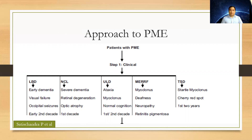In NCL, there is concomitant retinal degeneration and optic atrophy, so check the fundus properly. In Unverricht-Lundborg disease, cognition is usually normal, there may be ataxia later, and the course is usually benign. In MERRF, there can be concomitant deafness, so ask about sensorineural hearing loss and neuropathy. In Tay-Sachs disease, there can be a startle myoclonus and cherry red spot — so clinically you can identify the type of PME.